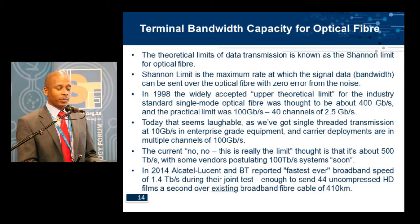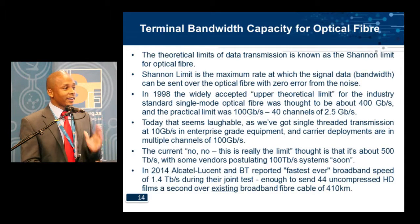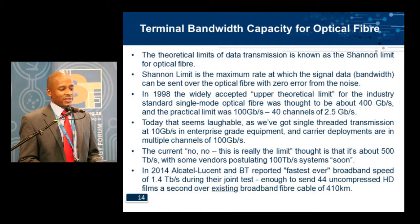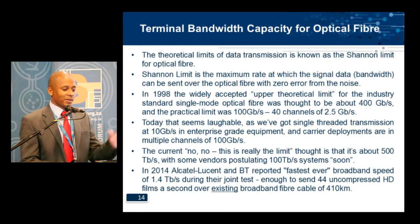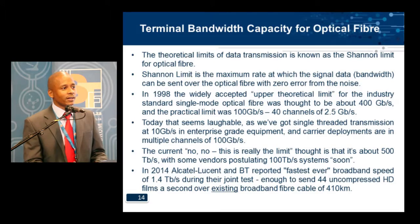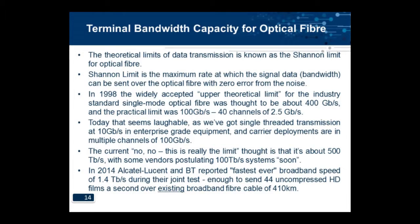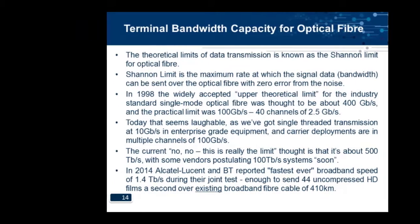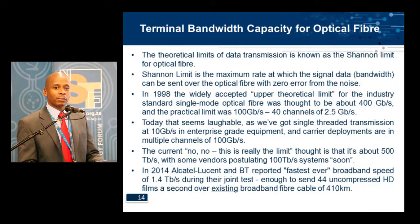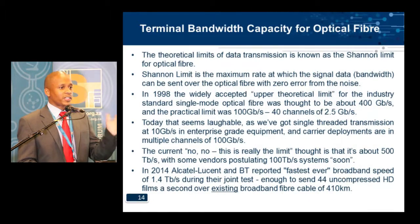Now, that's a huge leap. The current thought on the real limit is that it's about 500 terabits, with some vendors postulating a 100 terabit system soon. In 2014, Alcatel and BT reported the fastest ever broadband speed of 1.4 terabits per second during their joint test — enough to send 44 uncompressed high-definition films per second over existing broadband fiber cables over 410 kilometers.